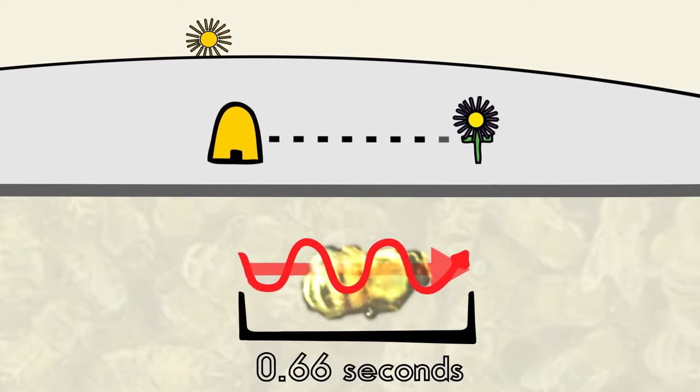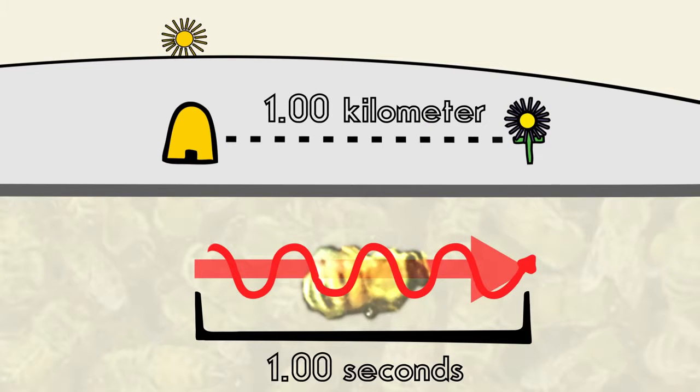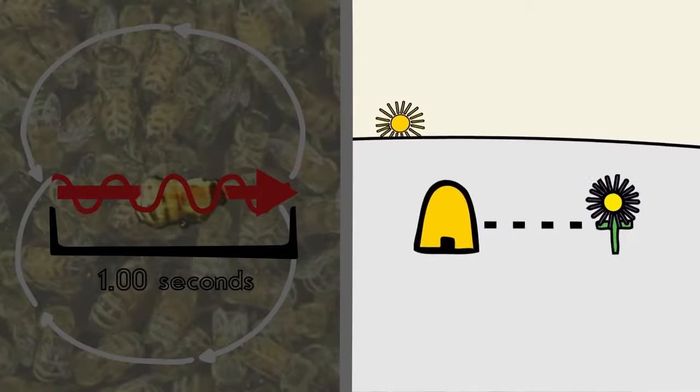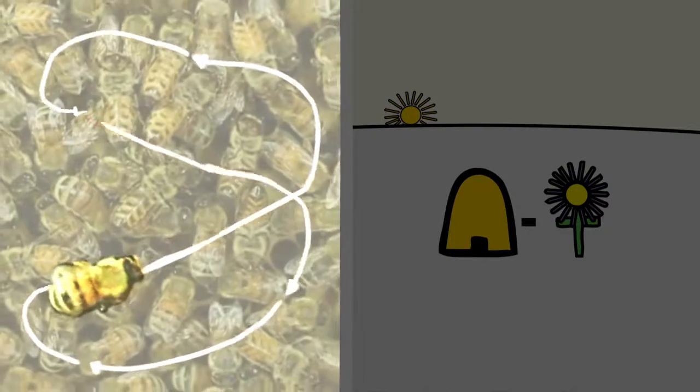In general, a bee increases the duration of this section by one second for every kilometre of distance to the food. When food is within several metres of the hive, this central section of the dance will shrink, causing a circular dance.